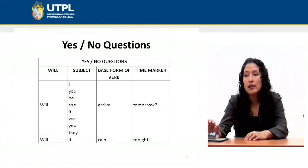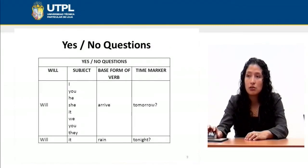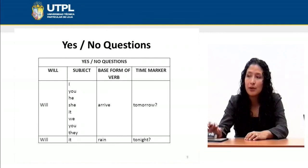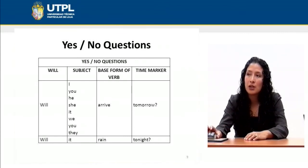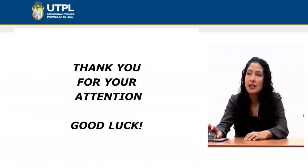Finally: 'Will it rain tonight?' or 'Will it rain tomorrow?' — these are examples using the subject 'it,' which we had not included in the previous examples. There are many other questions you can form with 'will.' Thank you very much, that is all.